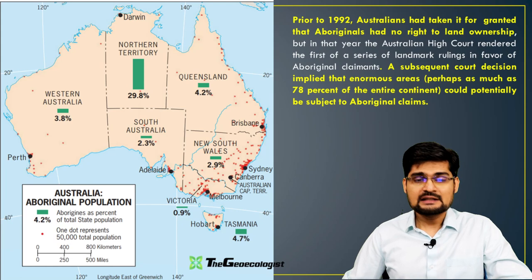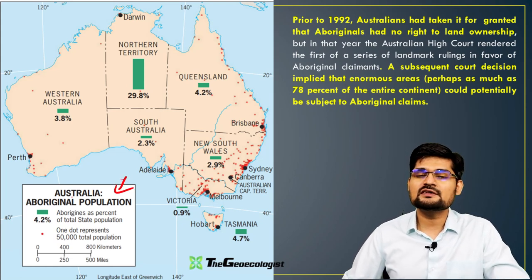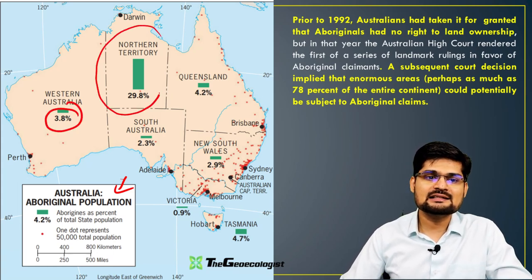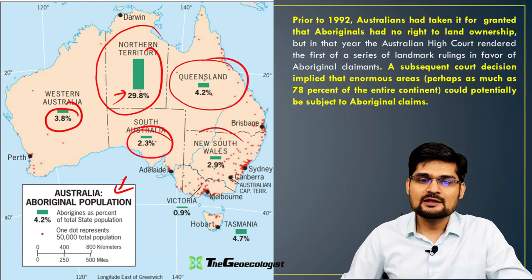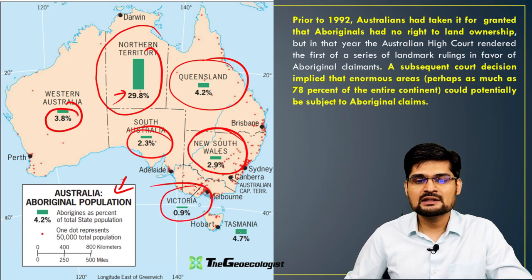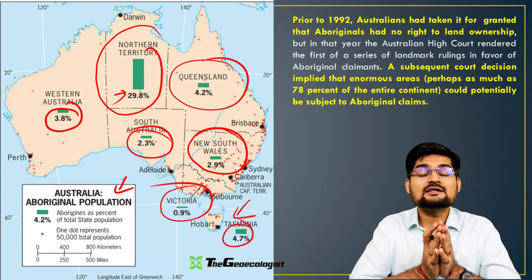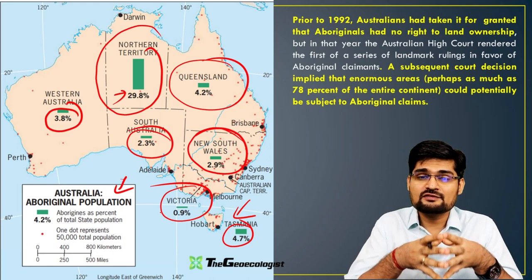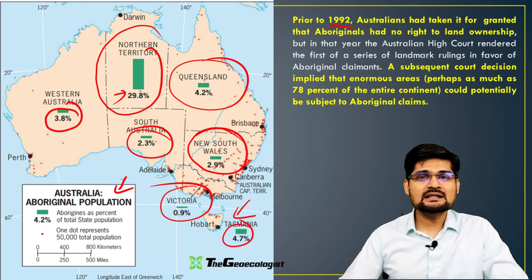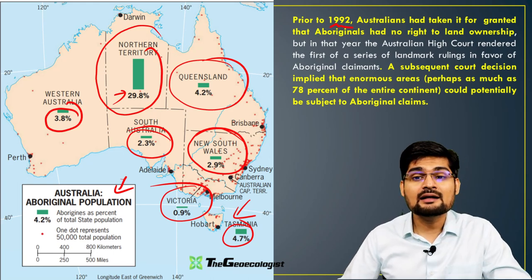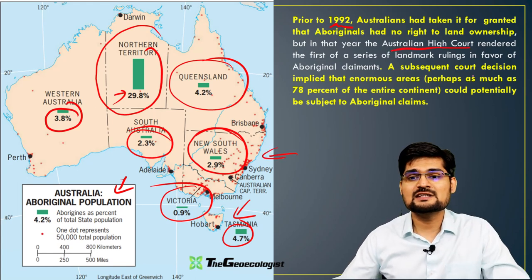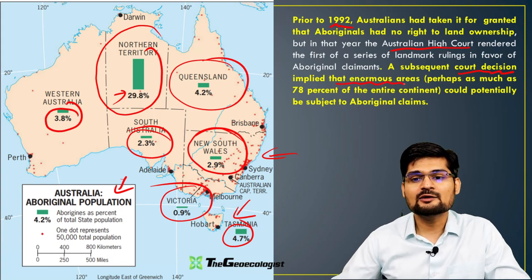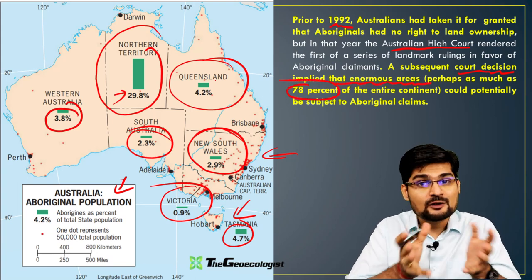Looking at the territory-wise population of the older tribes of Australia — the Aborigines — in the Northern Territory's desertic conditions they are almost 30%. Queensland has 4.2%, South Australia 2.3%, New South Wales 1.9%, Victoria 0.9%, and Tasmania around 4.7%. Prior to 1992, Australians had taken these Aborigines for granted until the High Court intervened and said that these people should be given their rights. A subsequent court decision implied that almost 78% of Australia belongs to these tribal people.